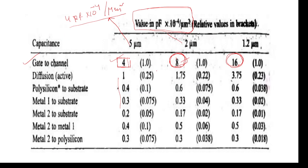To summarize, after substitution you will get these values: 4×10⁻⁴ pF/μm² for 5 micrometer design rules, 8×10⁻⁴ pF/μm² for 2 micrometer design rules, and 16×10⁻⁴ pF/μm² for 1.2 micrometer design rules. Thank you; if you have any suggestions please send them to me.